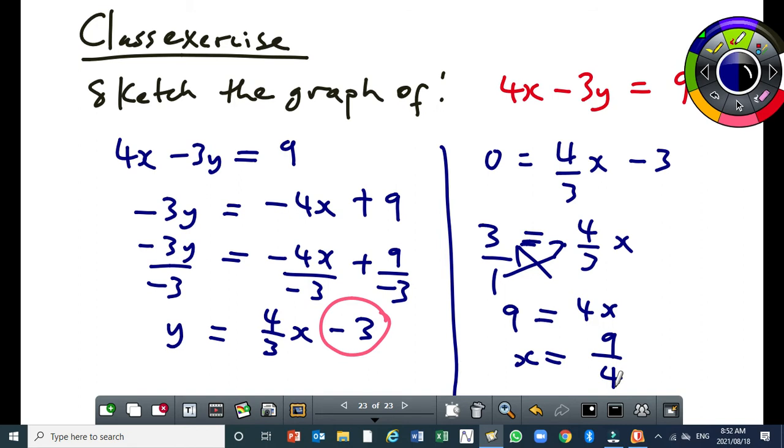That's not complicated. So the graph is going to pass through a point where y is negative 3, and x is 9 over 4.